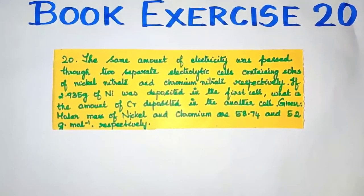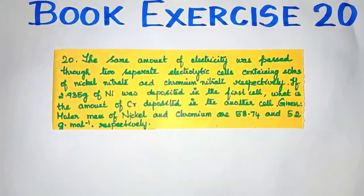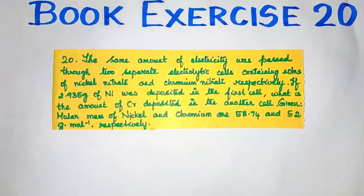Hope you all understand the question. There are 2 separate electrolytic cells, and the same amount of electricity is passed through both. The first cell contains nickel nitrate and the second cell contains chromium nitrate.